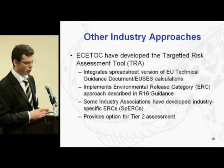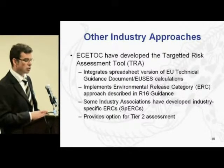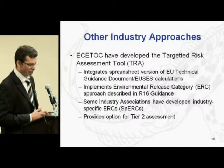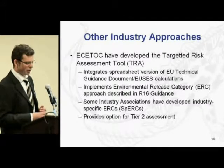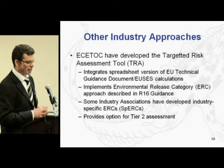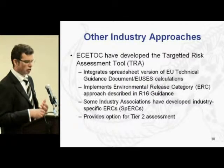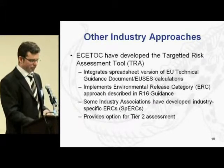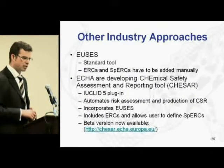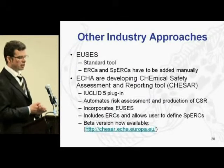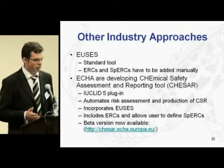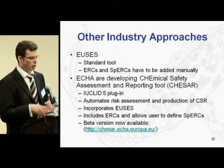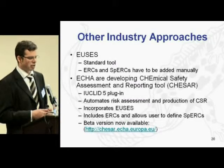In addition, some industry associations have developed industry-specific ERCs called SPERCs — a kind of tier 1.5 — and the TRA also gives you the option to use it for a tier two assessment based upon more specific situations like emission scenario documents. Some companies prefer to use E-USES directly, which performs the same calculations as the ESSETOC TRA, though you have to manually add ERCs and SPERCs and it lacks a batch run mode, making it less user-friendly.